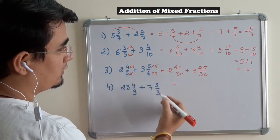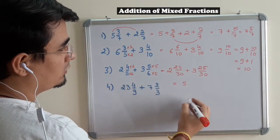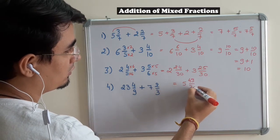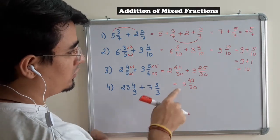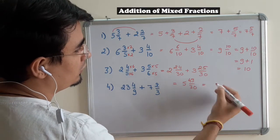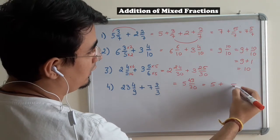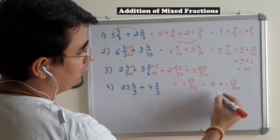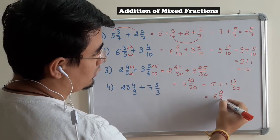Now, I can do it like this: 2 plus 3 is 5, and adding those two numbers is 49 upon 30. But what is the definition of a mixed fraction? There should be a whole and a proper fraction, but this is improper. So I can write it as 5 plus, this can be written as 30, 1 and 19. So the answer comes to be 6, 19 upon 30.